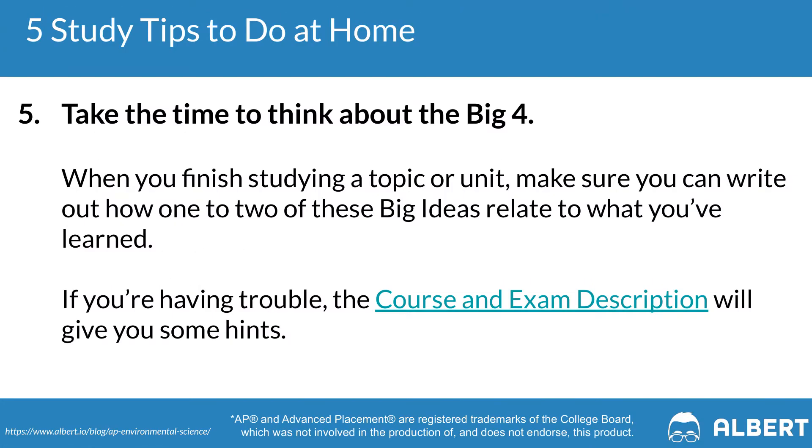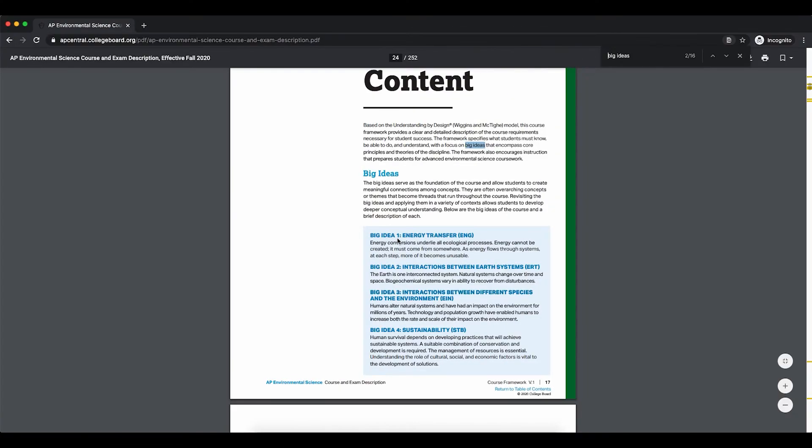Our fifth general APES tip is to think about how what you learned connects to the big four ideas. Whenever you finish studying a topic or unit, try to connect it to one or two of the big ideas. For example, in unit one, a main big idea is energy transformation. As you study geochemical cycles, articulate how energy is moved and transferred in each step.